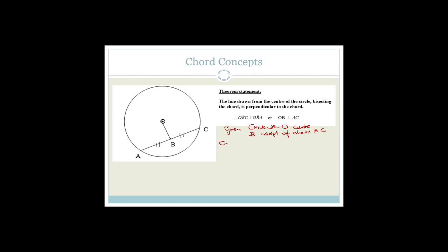Now you need to do a construction, and when you do your constructions you have to tell them what construction you're doing. We're going to use congruency. We're going to draw a straight line here and here. I want to point out that I don't have the facility of a pencil and ruler on the software — you guys need to draw this with a ruler, straight, in pencil, so you can erase it if you mess up. Your construction is to join OA and OC.